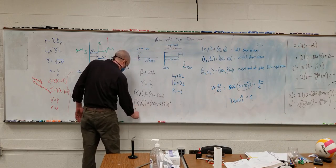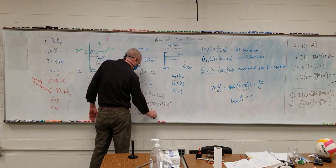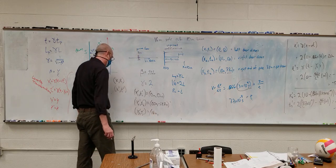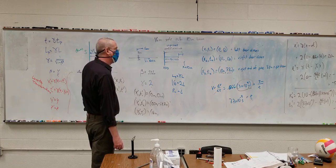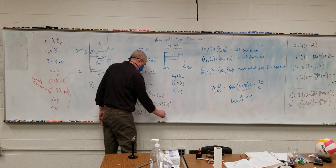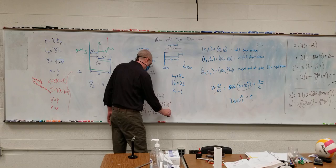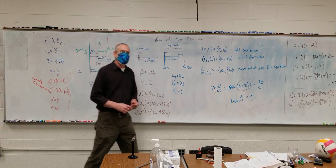Cool. X3 prime T3 prime equals 16 meters. Negative 43.3 nanoseconds. All right.